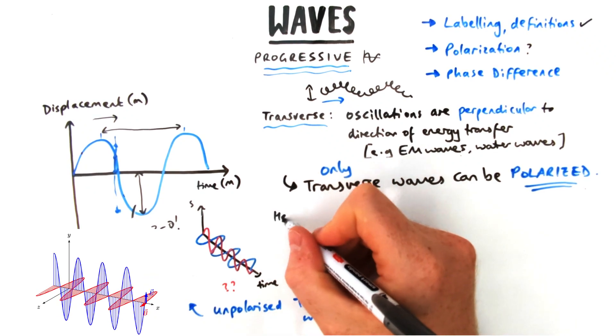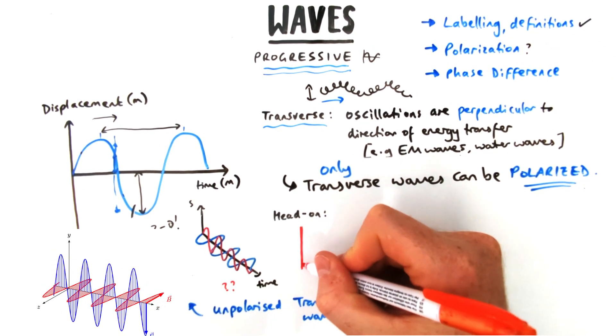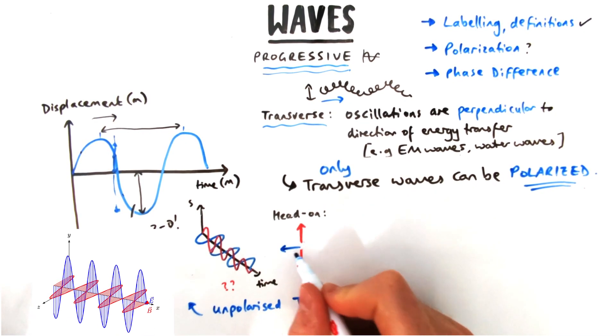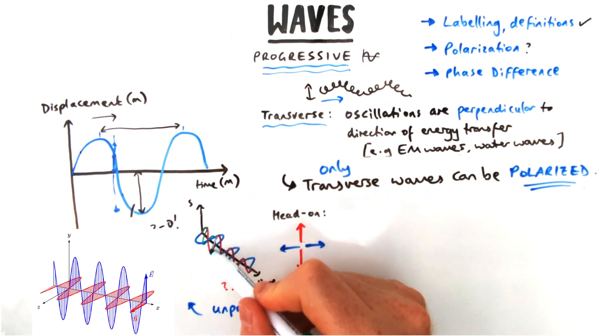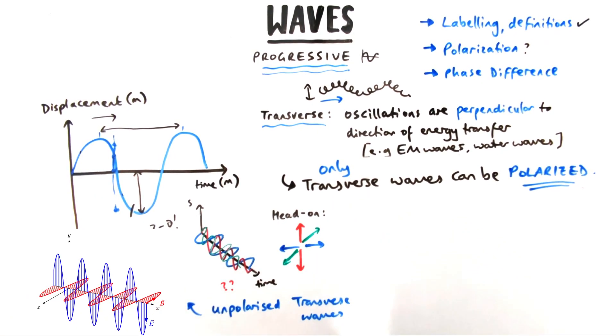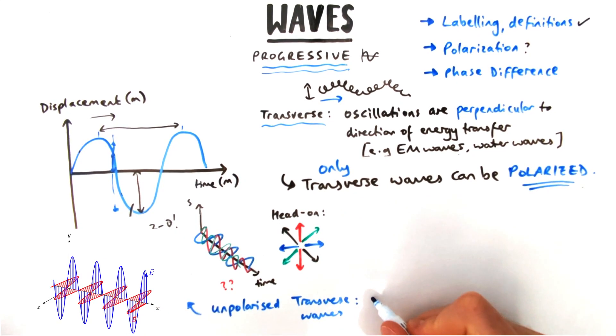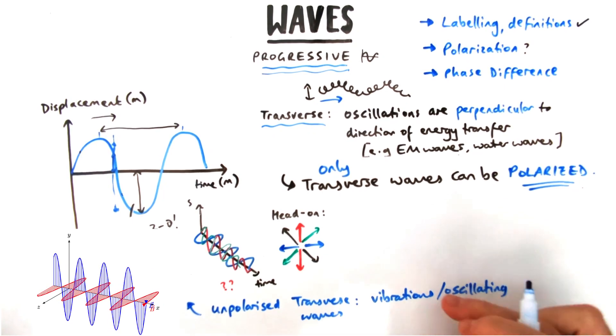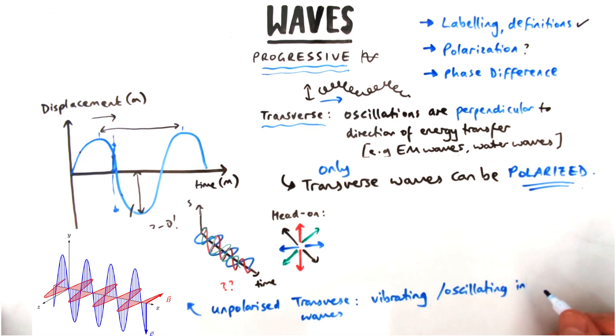It's easier to demonstrate if you look head-on. So if I look head-on at the wave, they might have oscillations up and down, from left to right, and some diagonally as well. Even though I can't draw in the diagram, they are in all directions. This is what's known as an unpolarized transverse wave. An example of that would be an electromagnetic wave. The definition would be that those vibrations or oscillations are in all planes or directions. Plane is a fancy word for direction if you weren't sure.